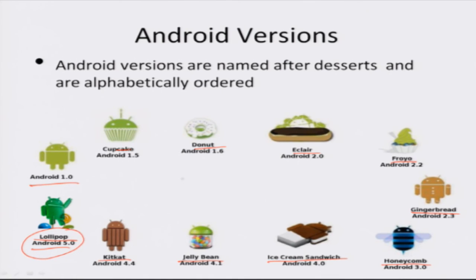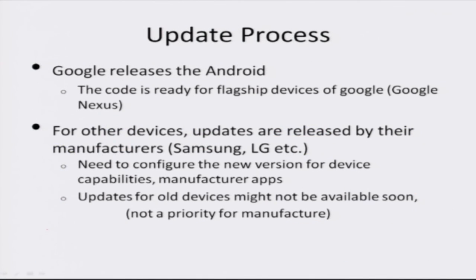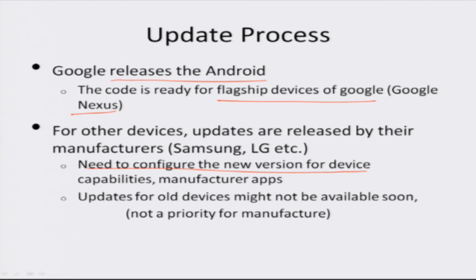Having all these various versions, what is the update process from one version to the next? Google releases the Android version, which is ready to use for Google's flagship devices under the tag Google Nexus. For other manufacturers like Samsung, Toshiba, and LG, they need to configure the newer version for their specific devices and manufacturer applications. For older devices, the manufacturer may not provide updates quickly because the priority is releasing new devices rather than supporting older ones. This is important to know because if we want access to the latest Android features, we should go for flagship devices.